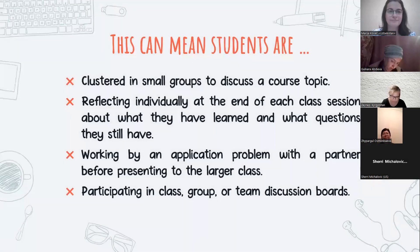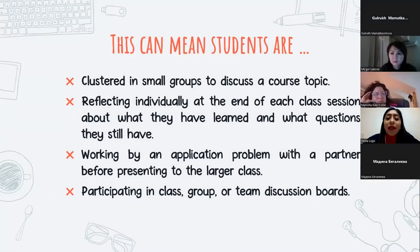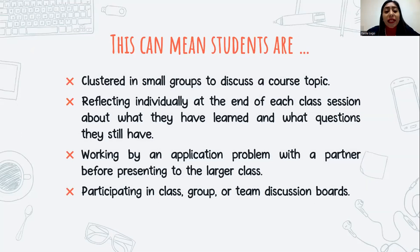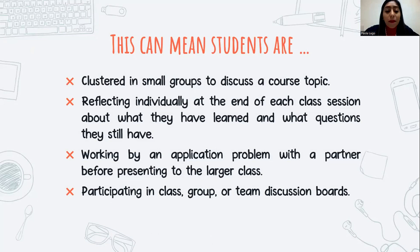This can mean that students are clustered in small groups to discuss a course topic, reflecting individually at the end of each class about the learning they have and about the questions they still have, working on an application problem with a partner before presenting to the whole class, and participating in class group or team discussion boards. Most active learning strategies provide students the opportunity to share their ideas and to develop collaborative work in order to give a solution.